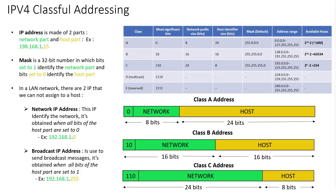In this table, we can see that classful addressing divides the IPv4 space into five classes: A, B, C, D, and E. However, only A, B, and C classes are used for network hosts. Class D is for multicast purposes and class E is for research cases.